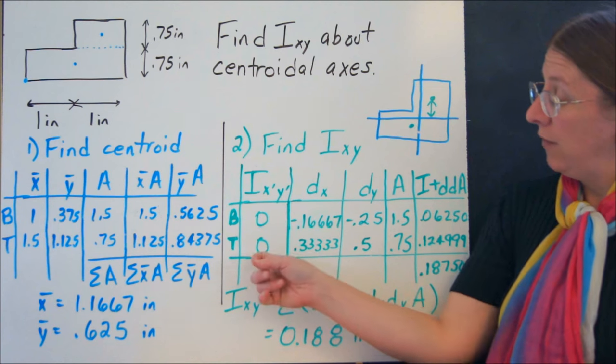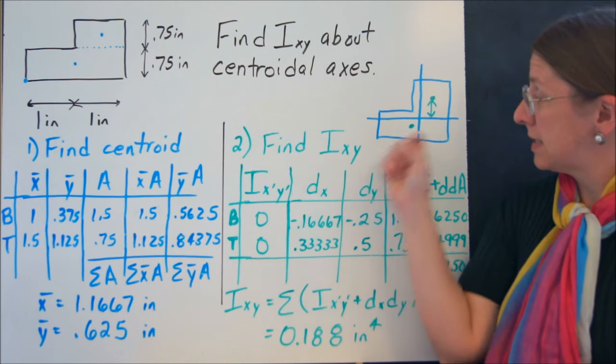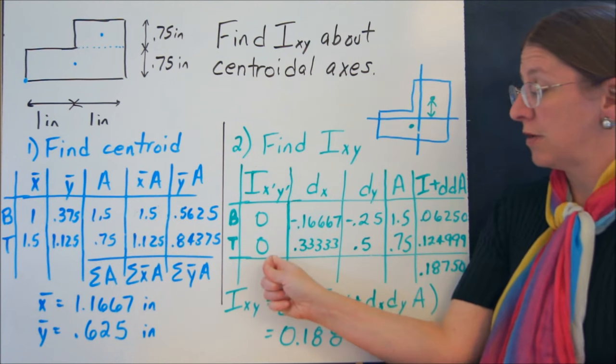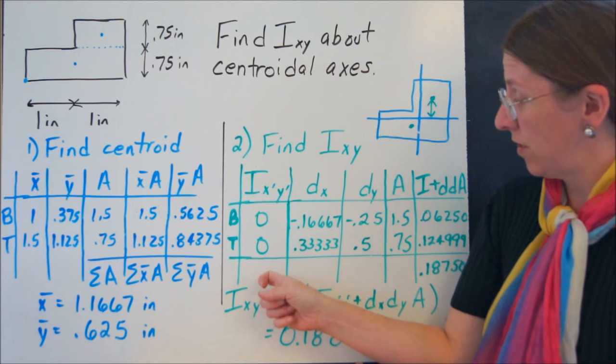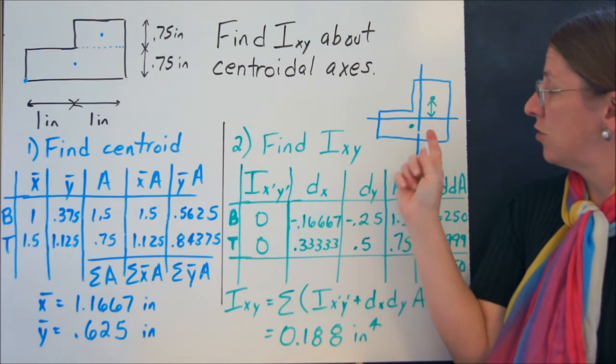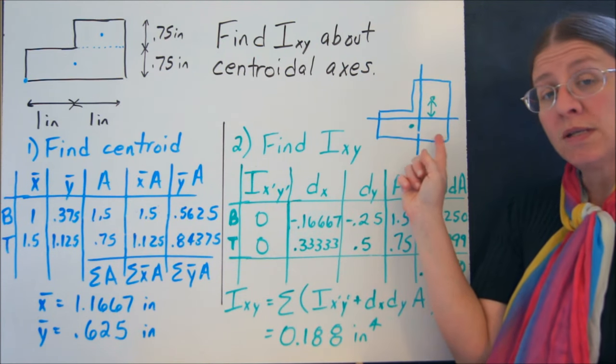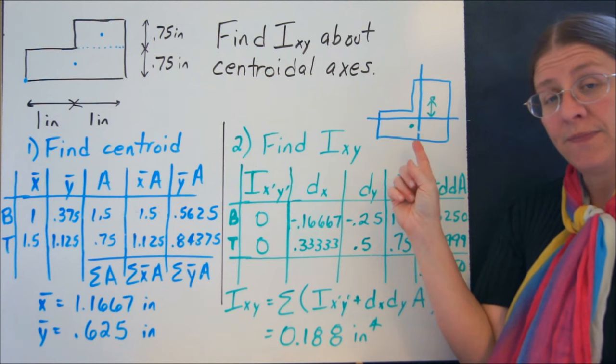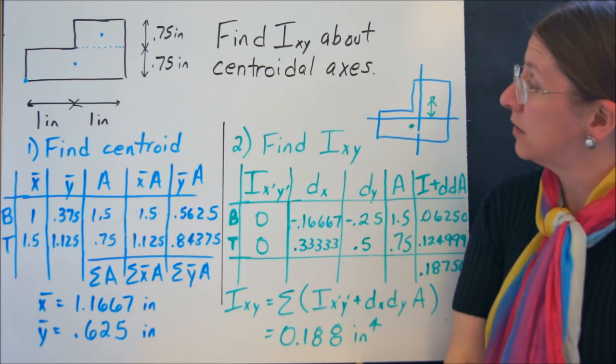So a couple things to remember. If you have a piece, an individual part, that is symmetric about its own cross-section, these are zero. And then these are measured between the centroid of each shape and the new centroidal axes. So that's how you find a product of inertia, most commonly.